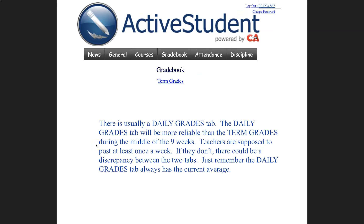Next, we have the grade book. The only item showing right now is term grades. However, usually there is a tab called daily grades. The daily grades tab will be more reliable than the term grades tab during the middle of the nine weeks. If there is ever a discrepancy between the two, the daily grades tab will have the correct average. Teachers are supposed to post their grades at least once a week. If they don't, there could be a discrepancy between those two tabs. Just remember, the daily grades tab always has the current average.